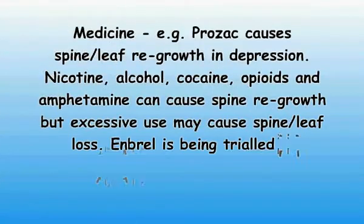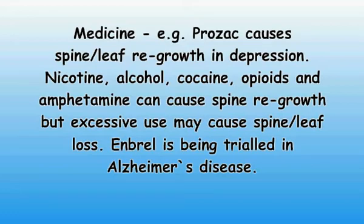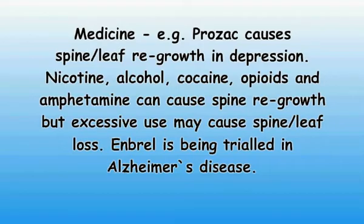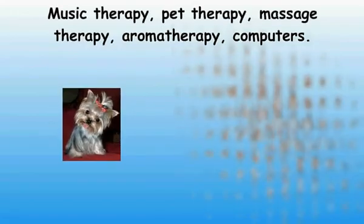Medicine — for example, Prozac can cause spine or leaf regrowth in depression. Nicotine, alcohol, cocaine, opiates, and amphetamine can cause spine or leaf growth, but excessive use may cause spine or leaf loss. More recently, antibiotics and anti-tumor necrosis factor treatment have been used with some success in fragile X syndrome, schizophrenia, and Alzheimer's disease. Stem cells have anti-inflammatory effects and are already being used in some countries in the treatment of psychiatric disease. Gene therapy is also being developed. Music therapy, pet therapy, massage therapy, aromatherapy, and computer aromatherapy.